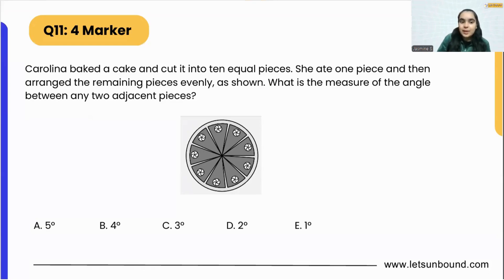The question is: Carolina baked a cake and cut it into 10 equal pieces. So in the cake there are 10 equal pieces. If this is a cake, we will have how many equal pieces? 10 equal pieces. She ate one of the pieces.